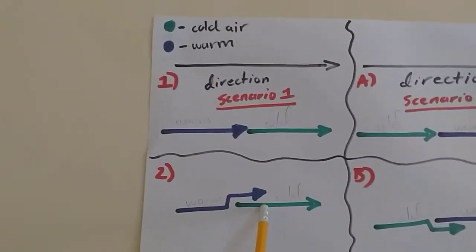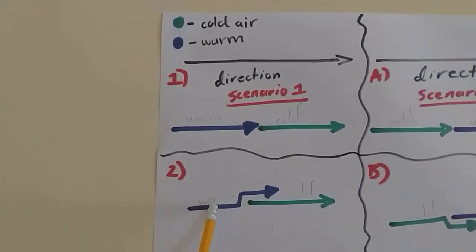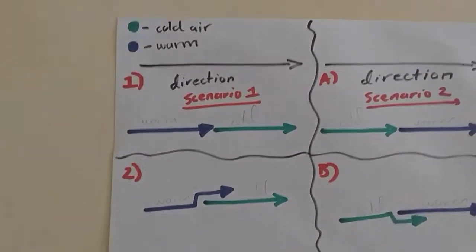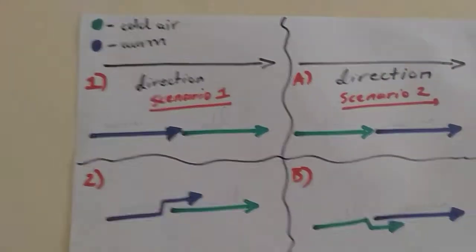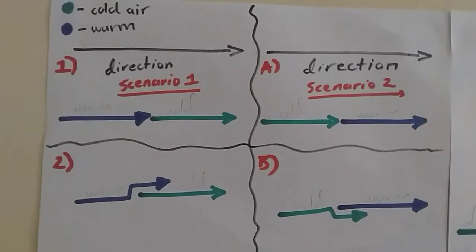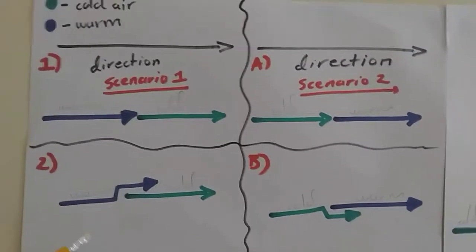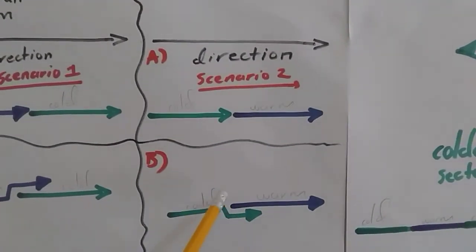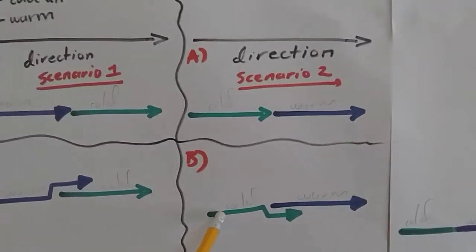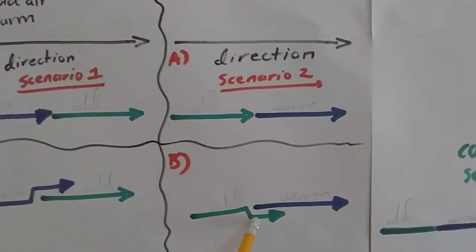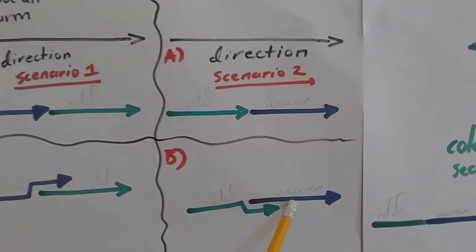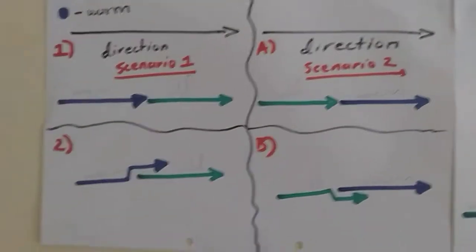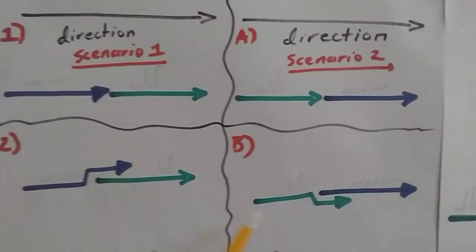When warm air catches up with cold air, the cold air is denser and heavier, while warm air is light. So the warm air overrides the cold air. These are two different air masses — they do not mix, just like water and oil: the heavier goes down and the lighter goes up. In scenario two it's the opposite: when cold air catches up with warm air, the cold air is heavier so it undercuts and goes under the warm air — that is where upliftment happens, pushing the warm air up.